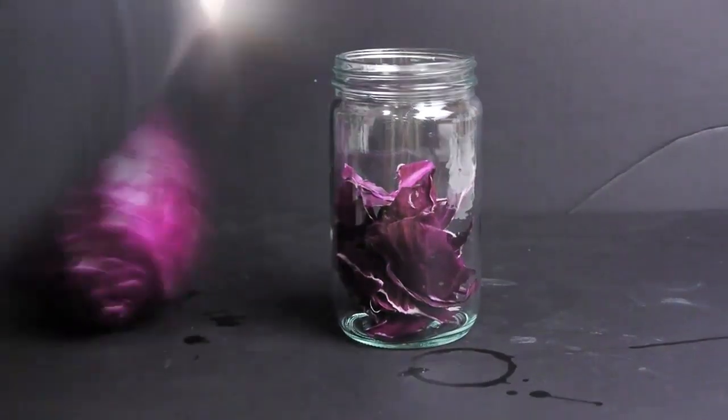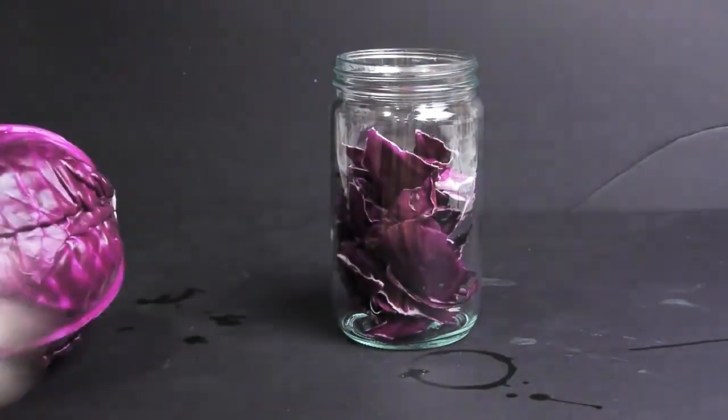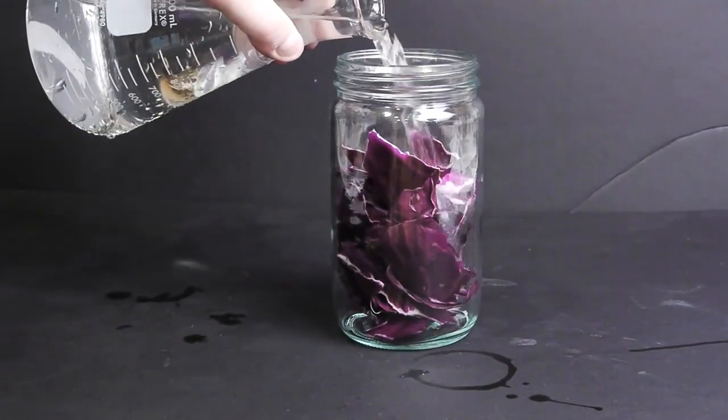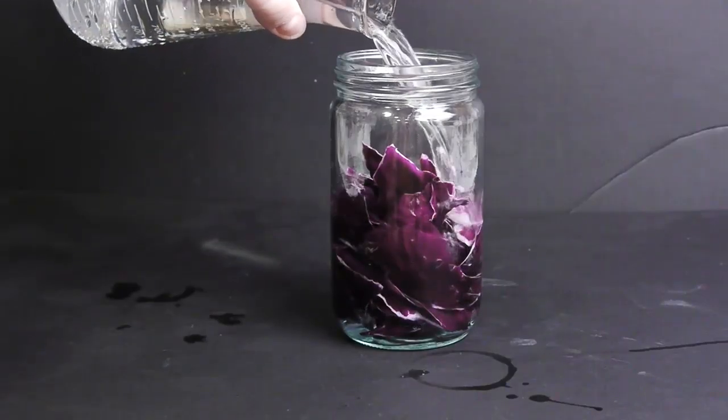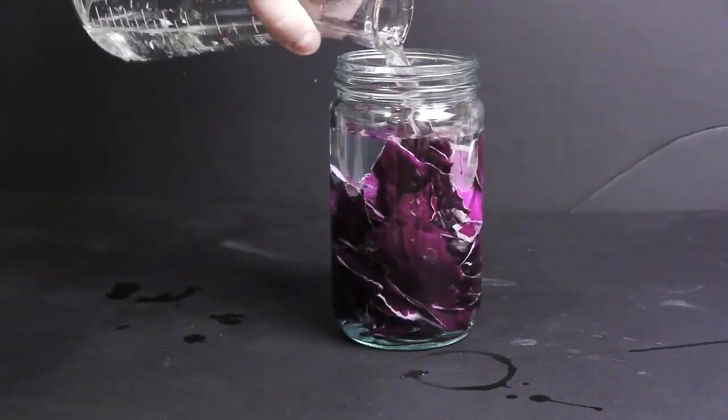Peel off about two or three leaves and put them into a jar. When you're done, pour in just a little bit of water, enough to fill it up.